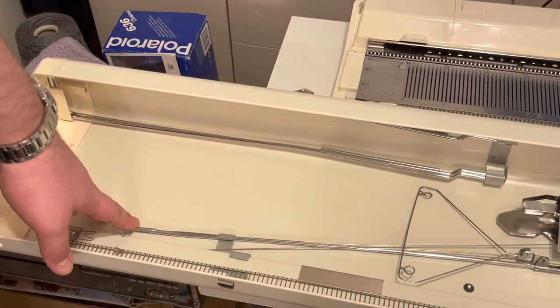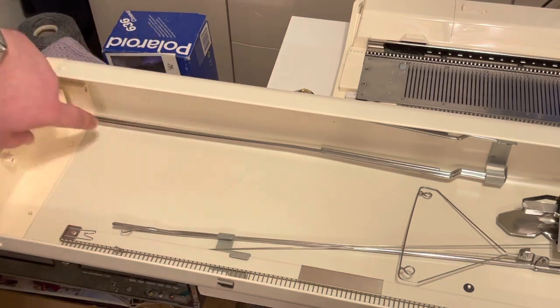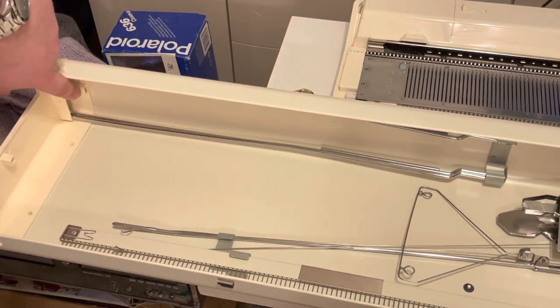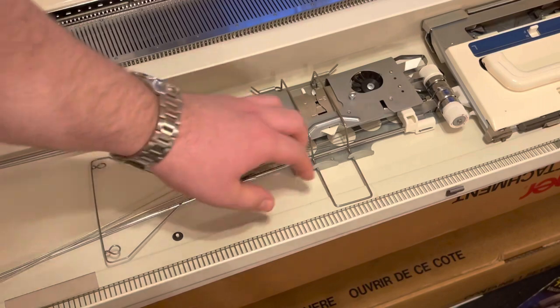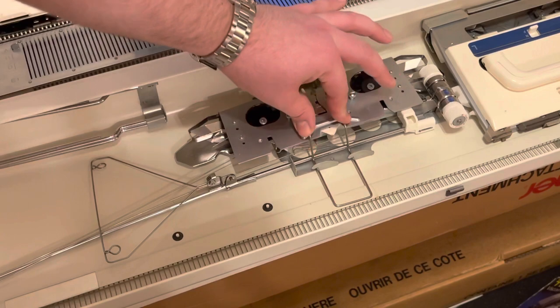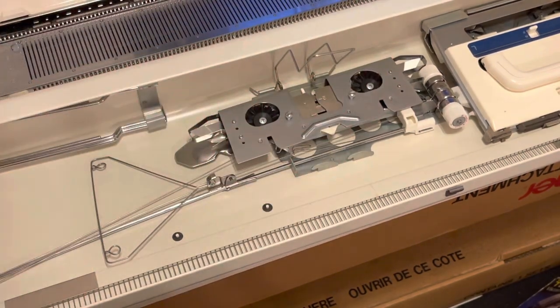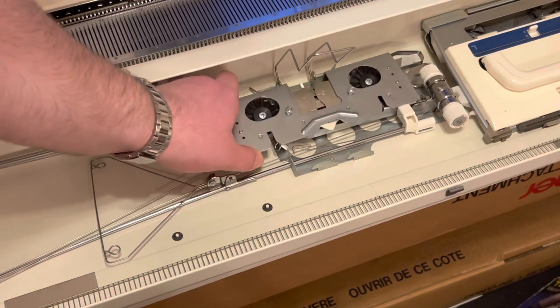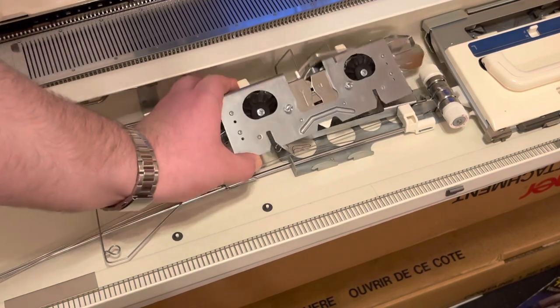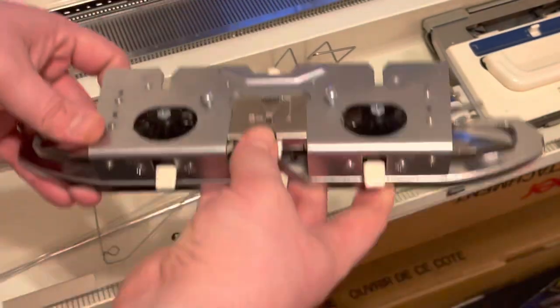So there are several components in the case lid. We have the two extension rails which store at the left end of the case. In the center of the case here we have this little spring loaded clip. You just push it down with two hands and it will lift up. And then you'll be able to remove this device which is called the sinker plate that attaches onto the front of the carriage.